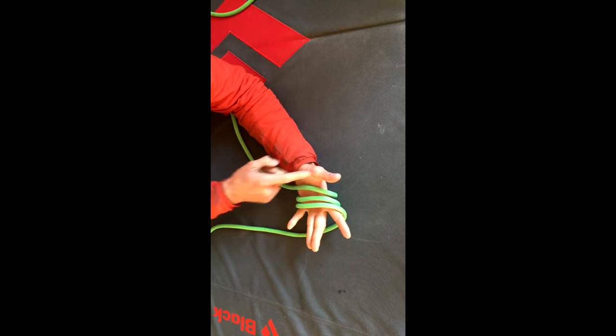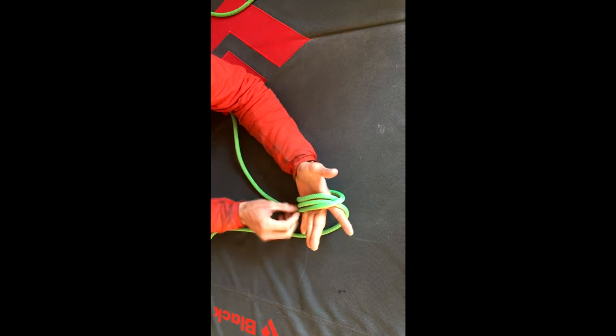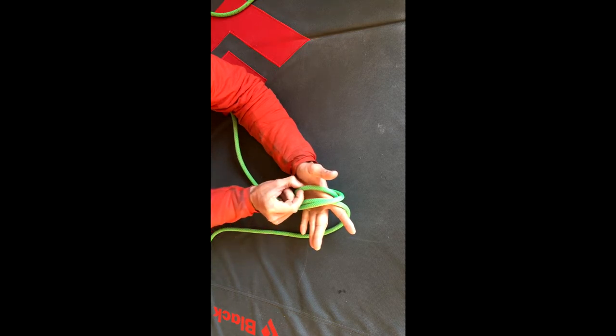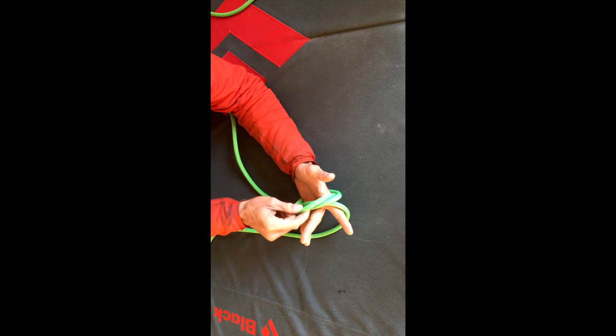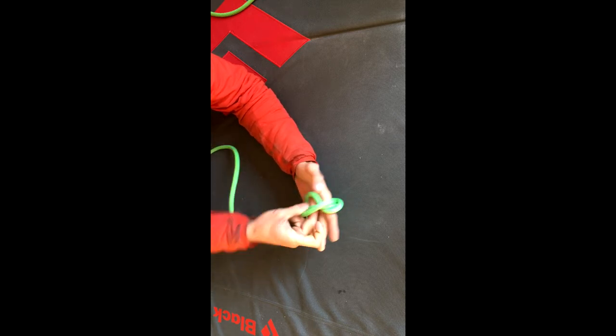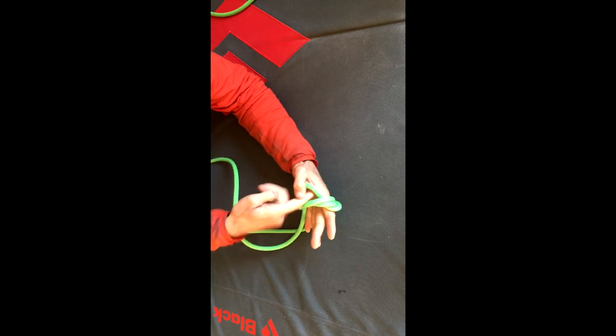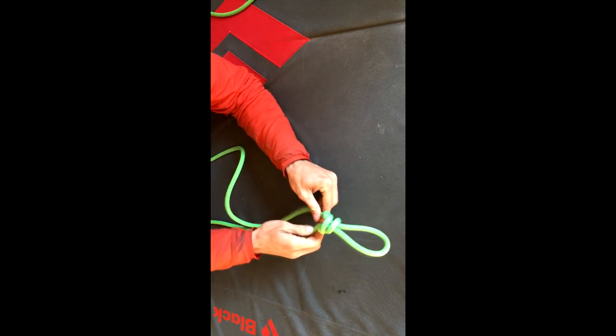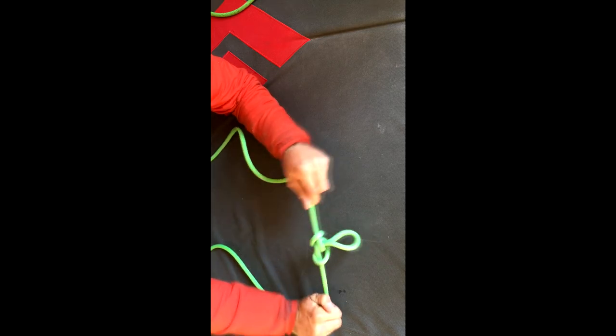The next step is we're going to take the strand closest to our thumb and pass it behind the other two like so. Then we're going to take the new closest strand to our thumb, pass it behind the other two, and then bring it up through the hole that our palm creates and pull it tight.